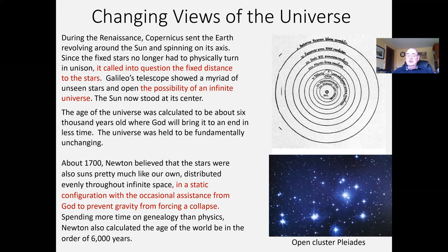About 1700, we come to Newton at the end of the scientific revolution. He believed the stars were pretty much like the sun, distributed evenly through space. Interestingly, he realized that given the universal law of gravity, left to its own devices, the stars would eventually collapse — what we call in cosmology a big crunch. Newton needed God to occasionally tinker with things to keep the universe in that nice, steady, static, unchanging state. He also did precise calculations from biblical genealogy to get the age of the universe to about 6,000 years old.